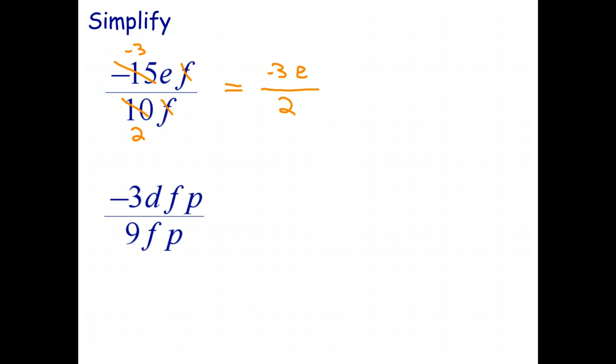So I can just get rid of that, make it look a bit prettier. So we simplified the coefficients. Negative 3 on 2. The e we just copied across. And the f's divided out.